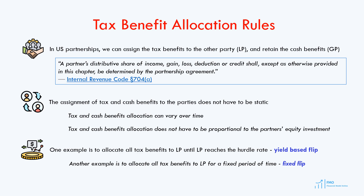Another example is to flip the allocation based on a certain period of time. For example, we may assign all the tax benefits to the limited partner for 6 years and then flip the allocation in year 7. Why do we flip in year 7? Because the MACRS depreciation for most wind and solar projects ends in year 6, and from year 7 the partnership has to pay taxes. This is referred to as a fixed flip.